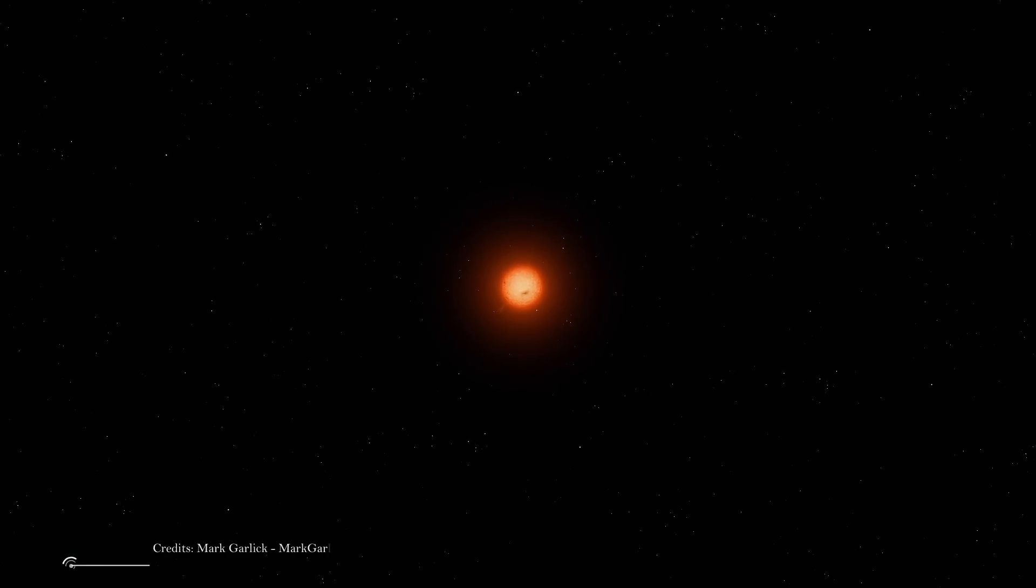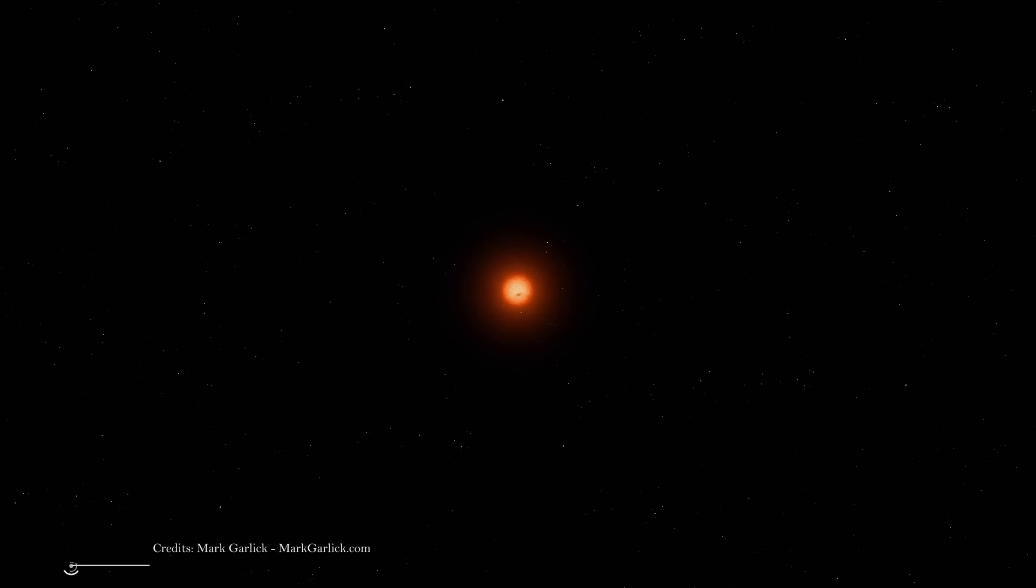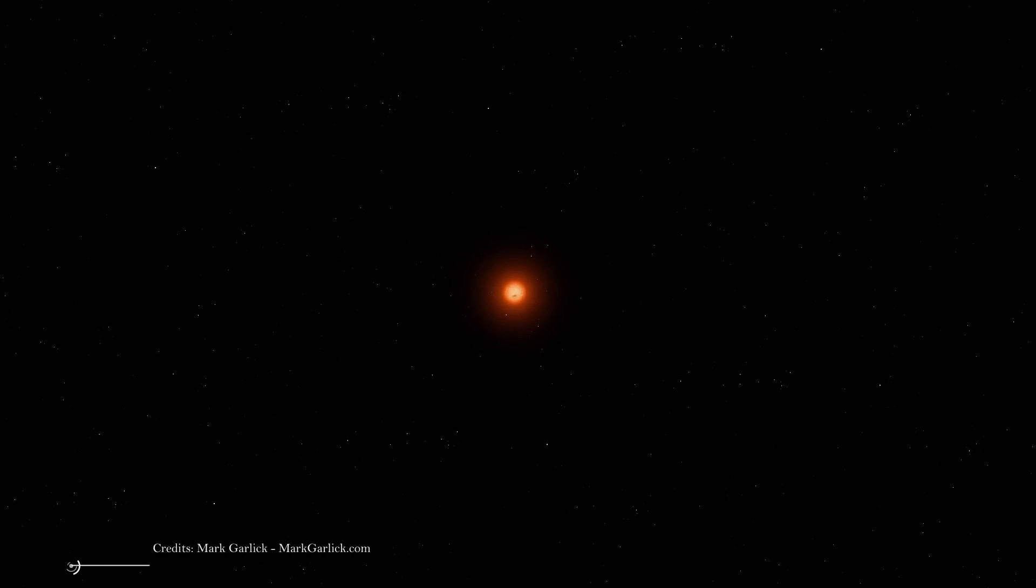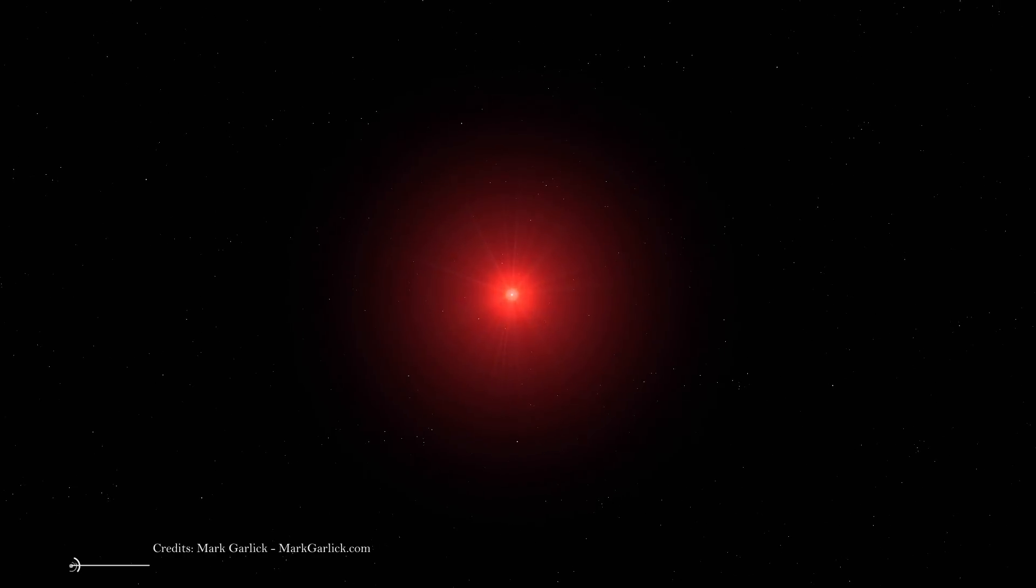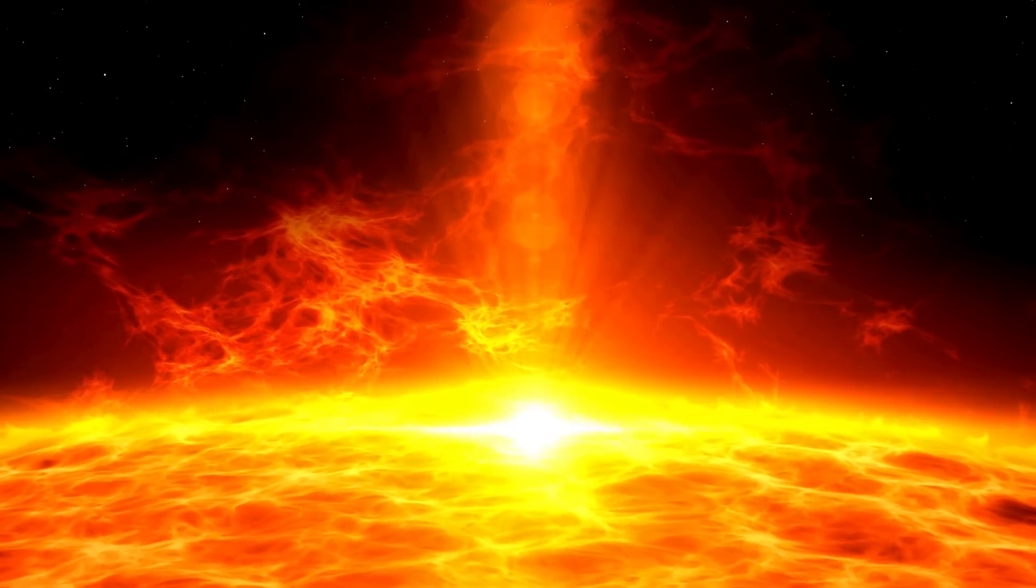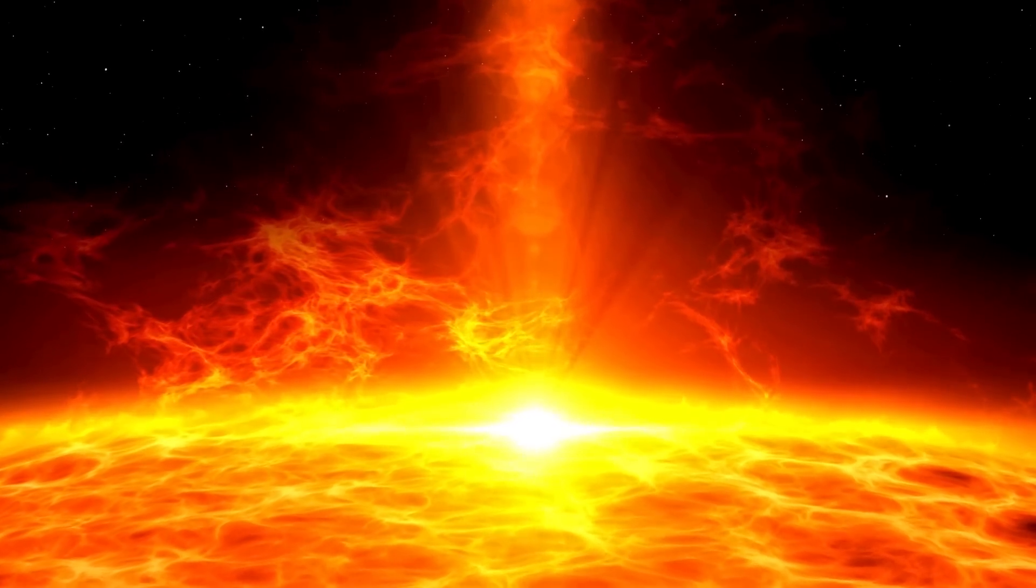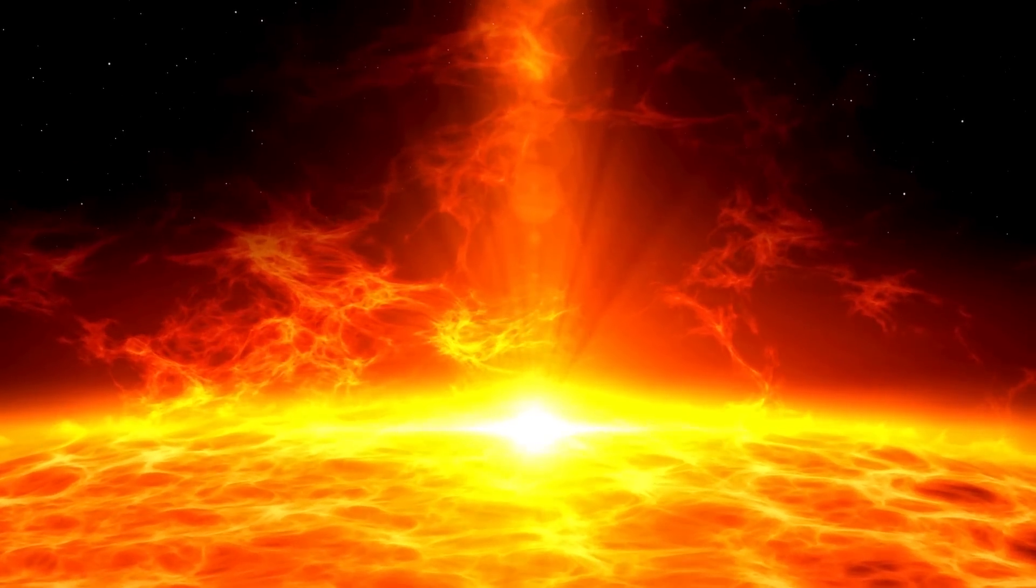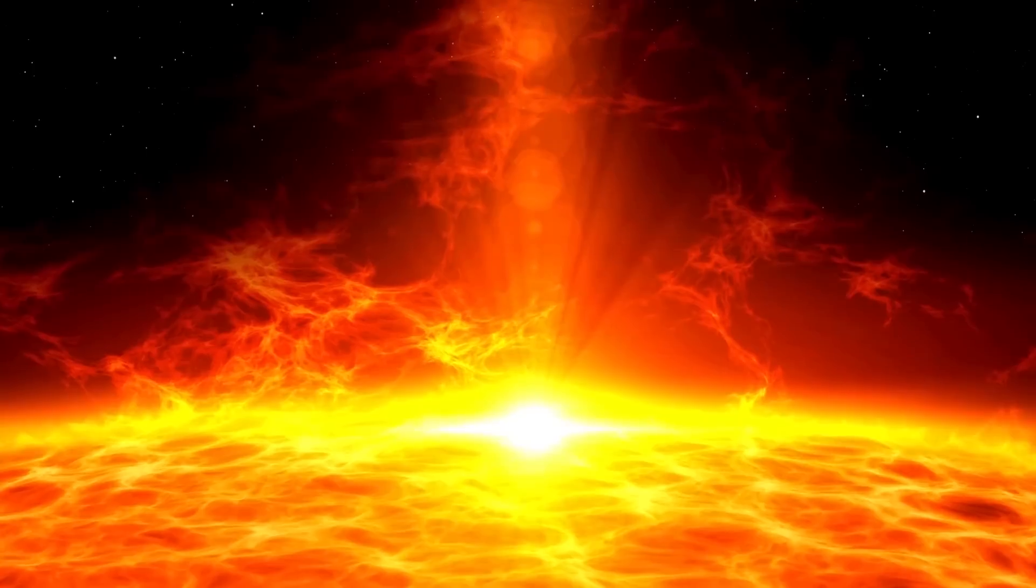When the star reaches the end of its red giant phase, it will explode as a type 2 supernova, which occurs when the core of a star can no longer generate enough energy to sustain its enormous mass, which collapses due to its own gravity until the star, unable to withstand the immense pressure, explodes, releasing an enormous amount of energy.